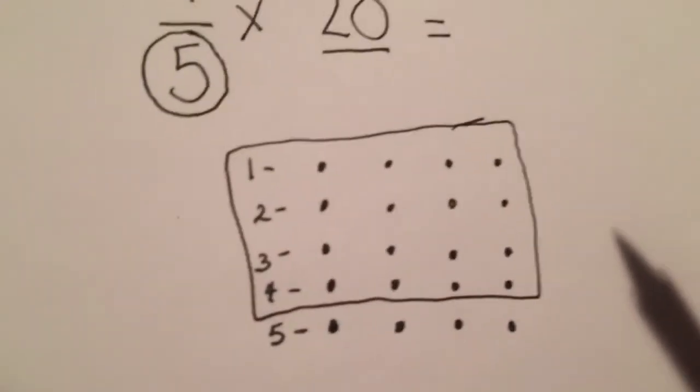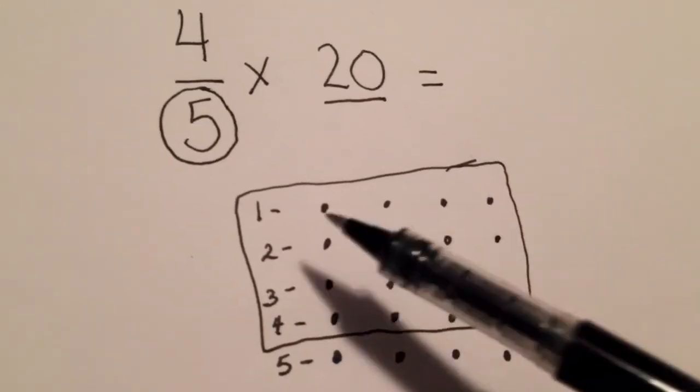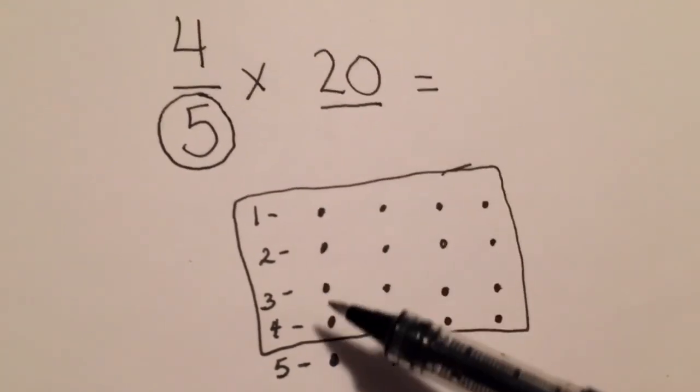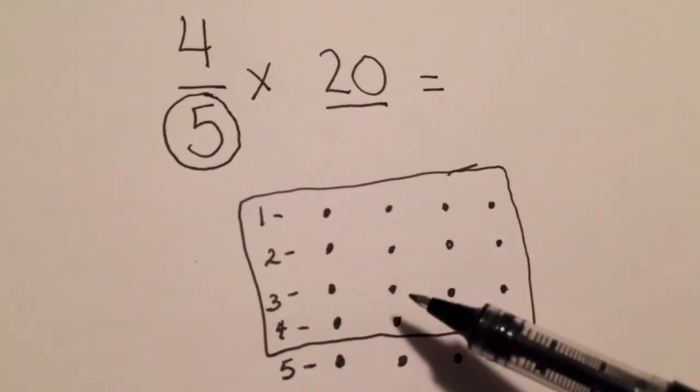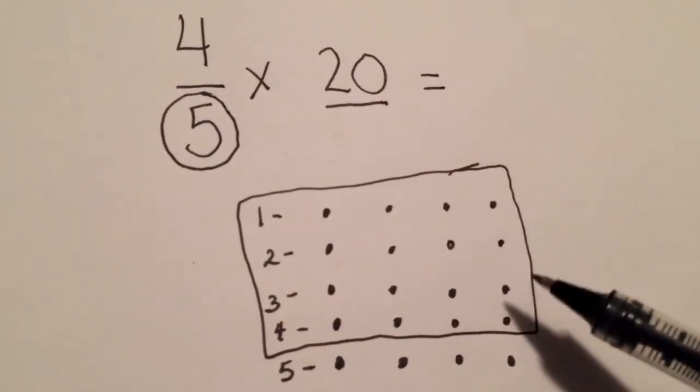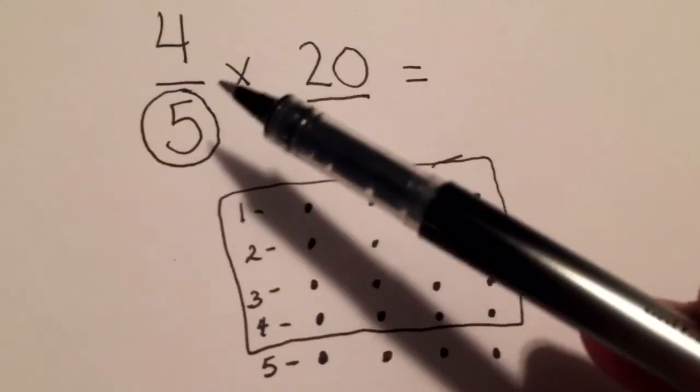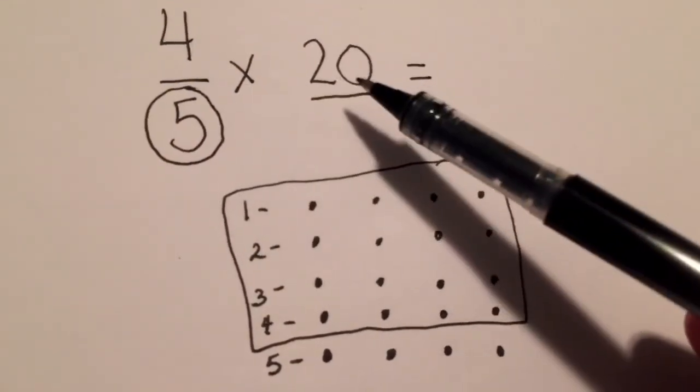Now that I've done that, I'm just going to go ahead and count my dots: one, two, three, four, five, six, seven, eight, nine, ten, eleven, twelve, thirteen, fourteen, fifteen, sixteen.